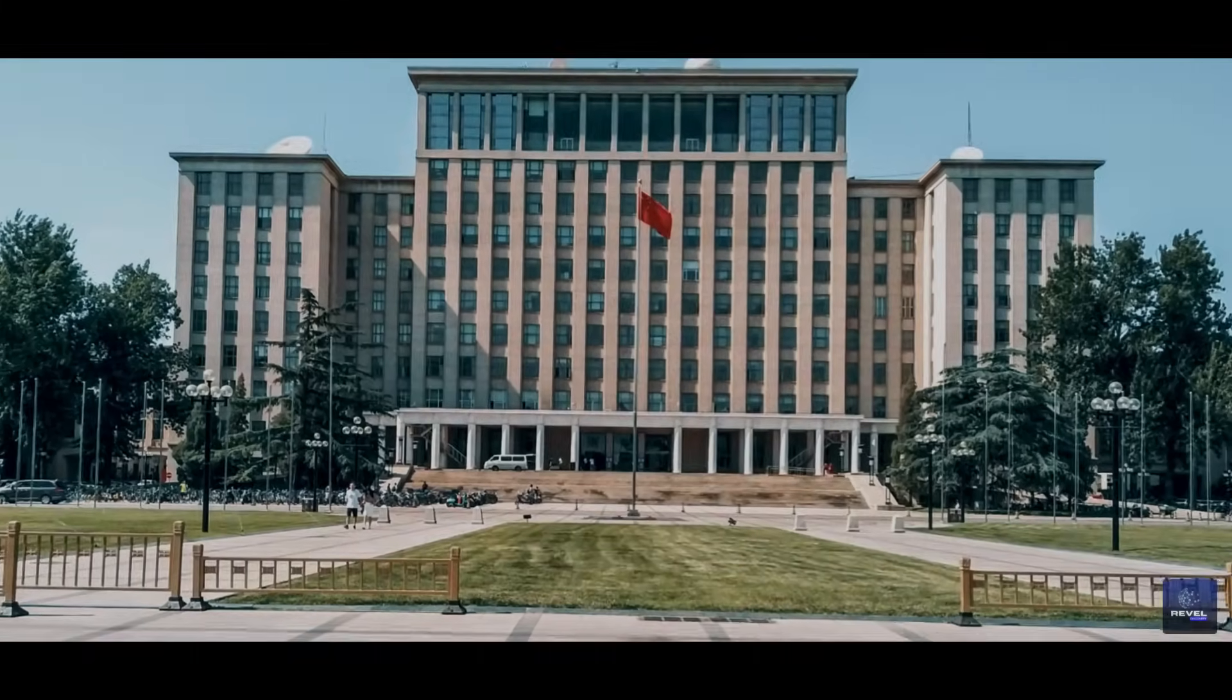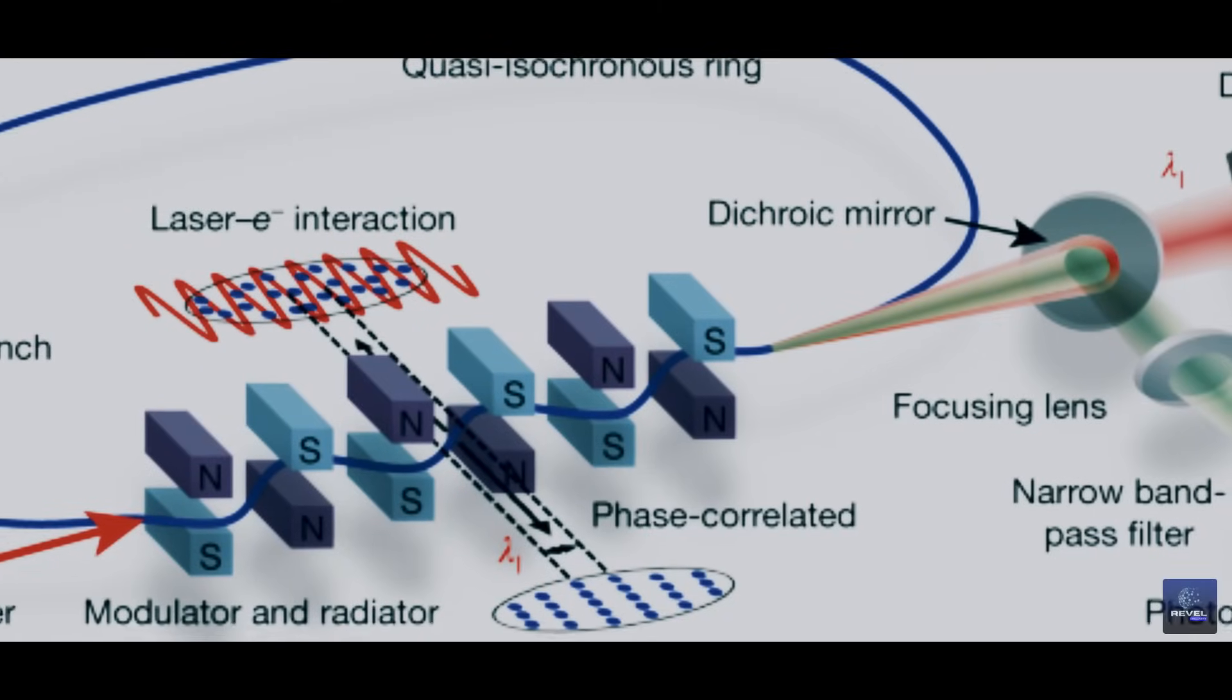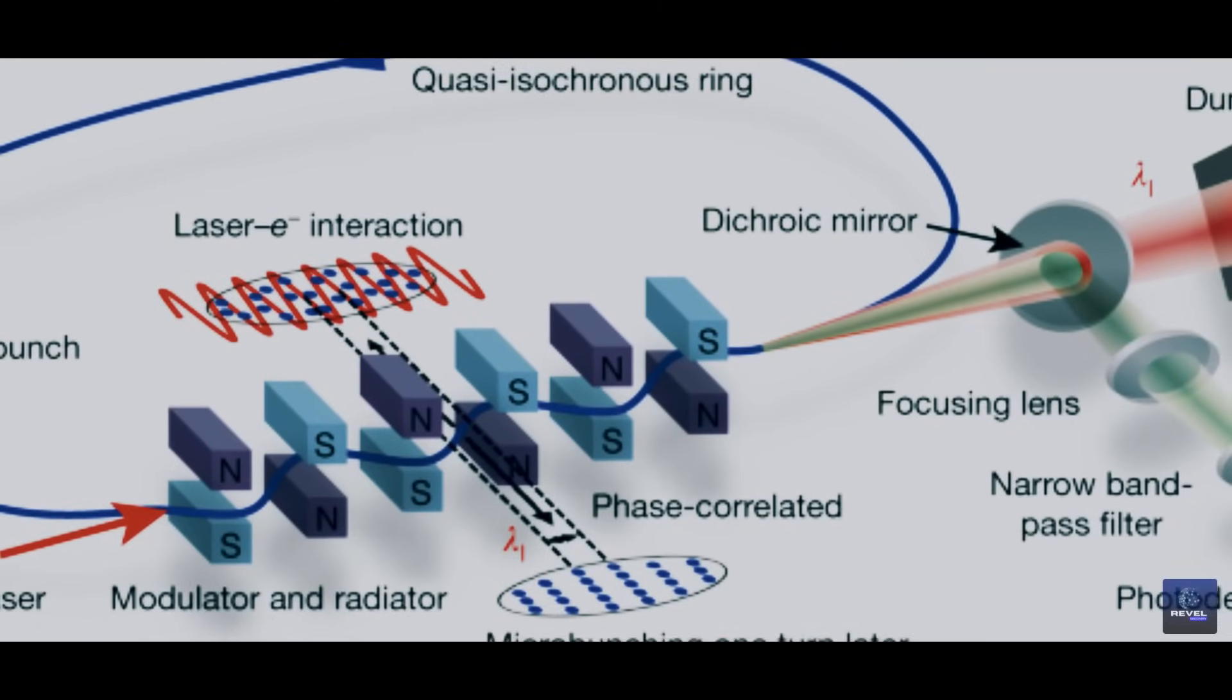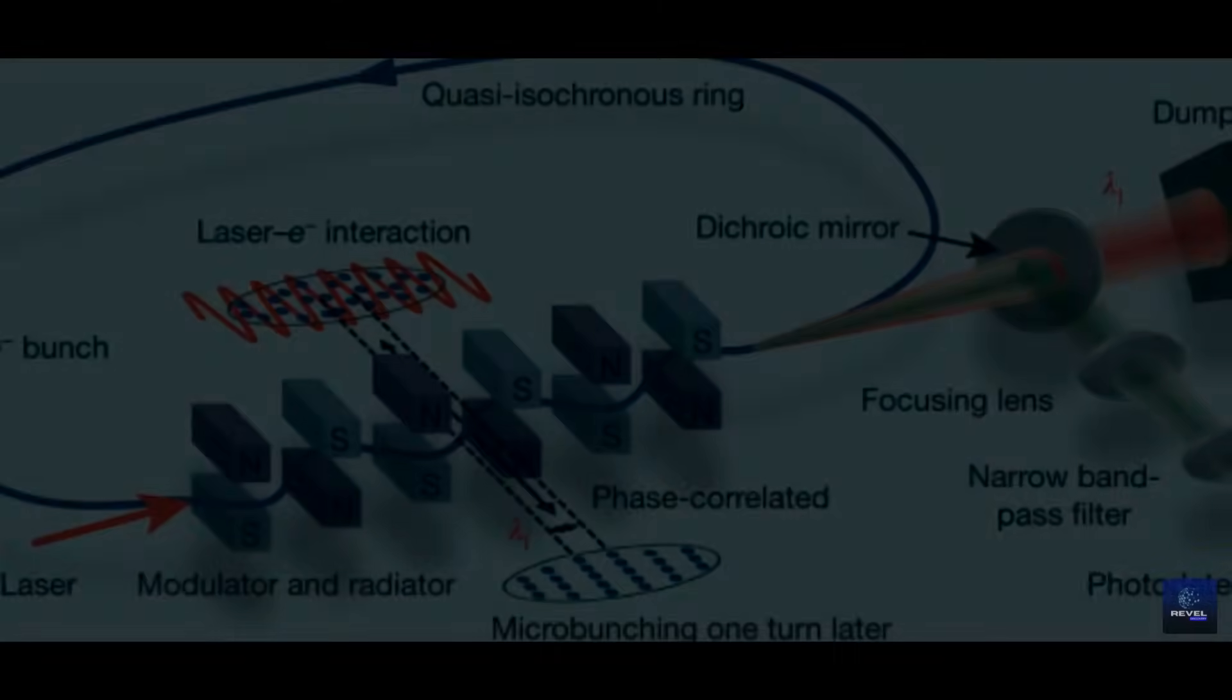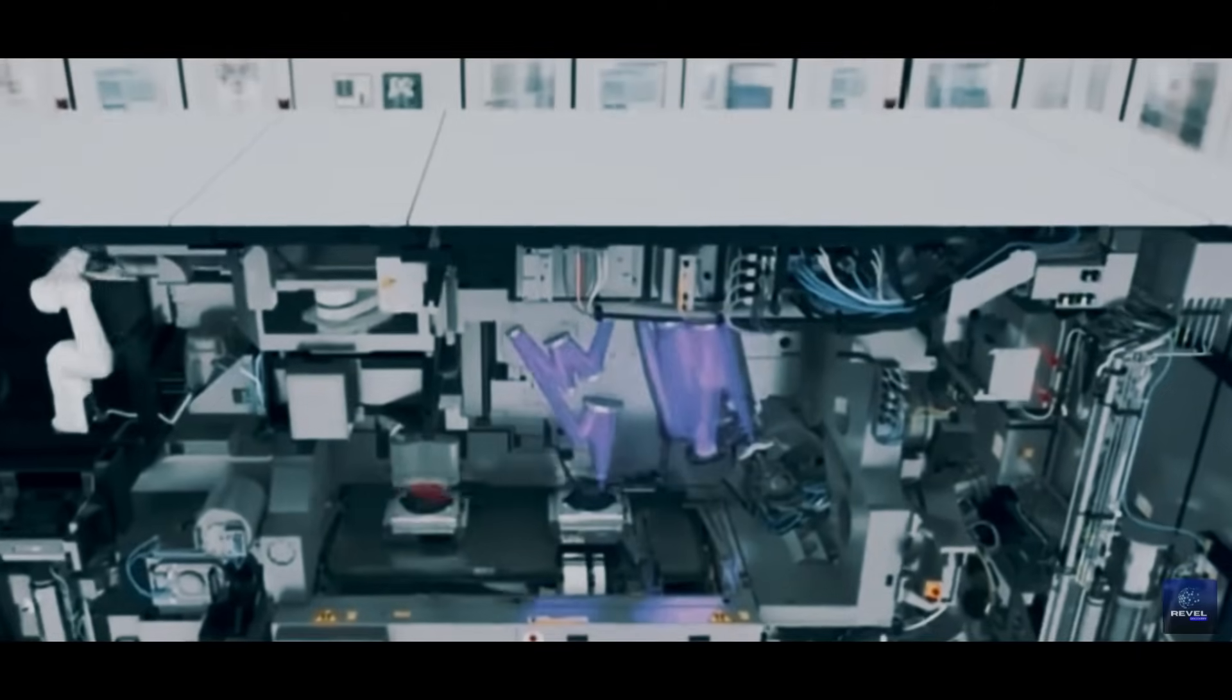Tsinghua University has recently achieved a significant milestone by completing the development of a new particle accelerator light source called Steady-State Microbunching or SSMB. This technology holds immense potential as a direct application for future EUV lithography machines.